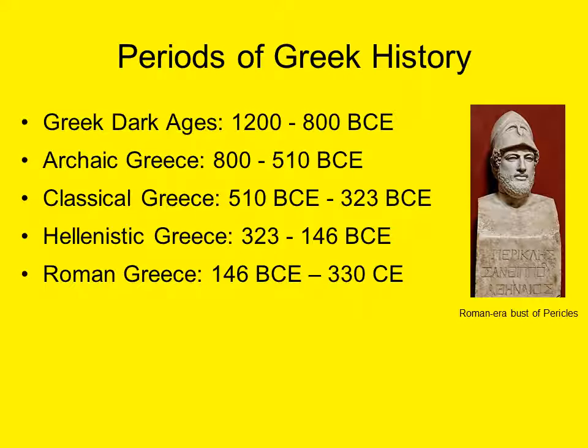Archaic Greece: this period is associated with the emergence of the polis (P-O-L-I-S), which we'll talk about in a few slides, and the creation of Greek colonies throughout the Mediterranean world. This time period is also associated with the beginnings of sophisticated Greek philosophy, theater, and poetry.